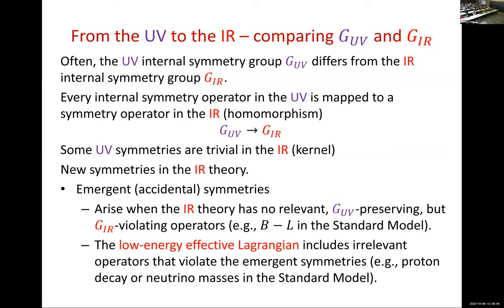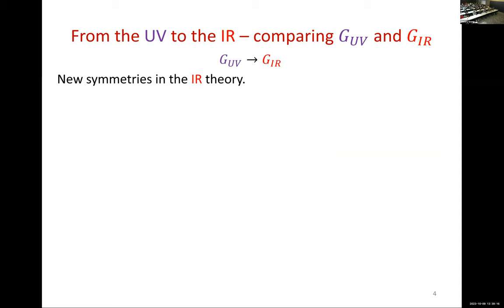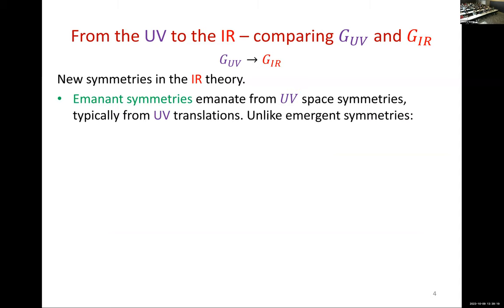If we try to match anomalies, these emergent symmetries should not match anything in the UV because the symmetry is not there. That's not the full story — there are eminent symmetries. These are symmetries that emanate from the UV space symmetries, but they act as internal symmetries in the IR. For example, UV translations can lead to internal symmetry. These symmetries are really different from emergent symmetries. In the literature, people discuss them and refer to them as emergent symmetries, but they have fundamentally different properties.